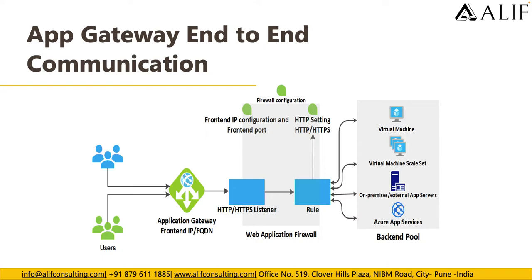With WAF, you create HTTP or HTTPS listeners and rules to send traffic to the backend pool. You can have two types of listeners: a basic listener or a multi-site listener. The basic listener only allows you to run one website from a single Application Gateway. If you have multiple backend pools running applications on different FQDNs, you need a multi-site listener, which allows you to host multiple websites through one Application Gateway and secure all of them with a single gateway.